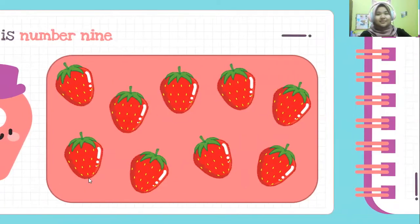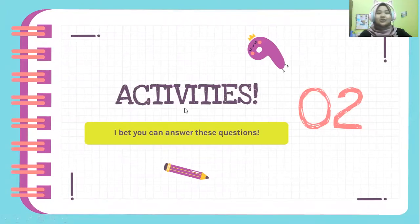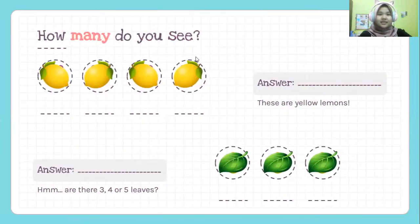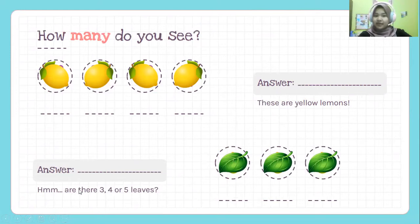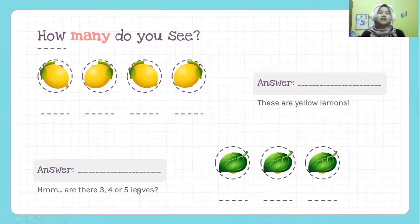Good job, kids. Let's go to the activities. I bet you can answer these questions. Now, teacher wants you to tell me: how many lemons are there, and how many lemons represent what number? The next question is, how many leaves are there representing what number? Are there three, four, or five leaves? Try to answer this first.